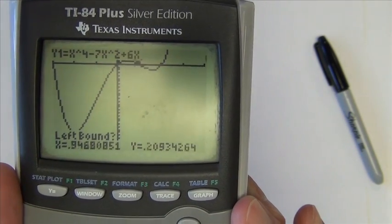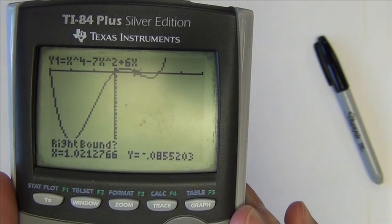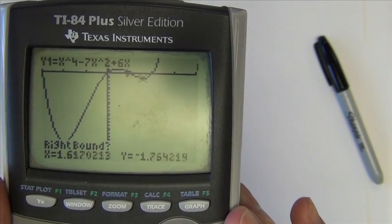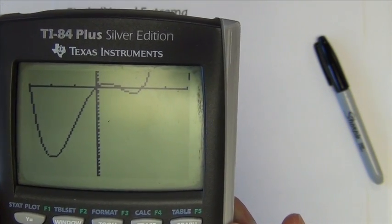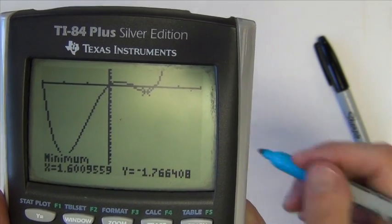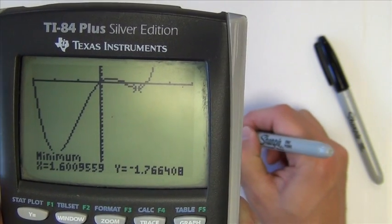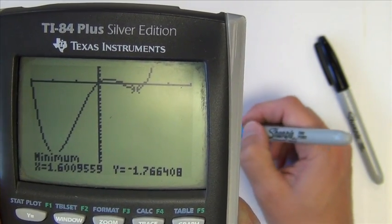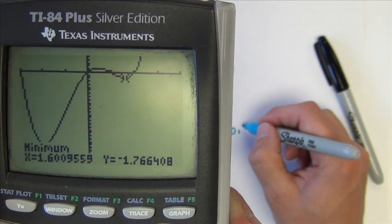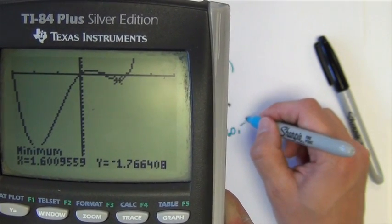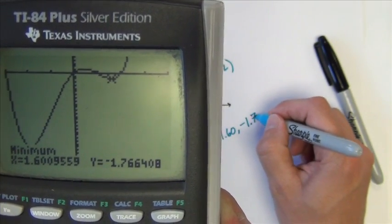And it's going to ask me the same things. Go to the left side of the minimum. Go to the right side of the minimum. Guess what you don't have to do. And so it's a minimum at 1.60, negative 1.77.